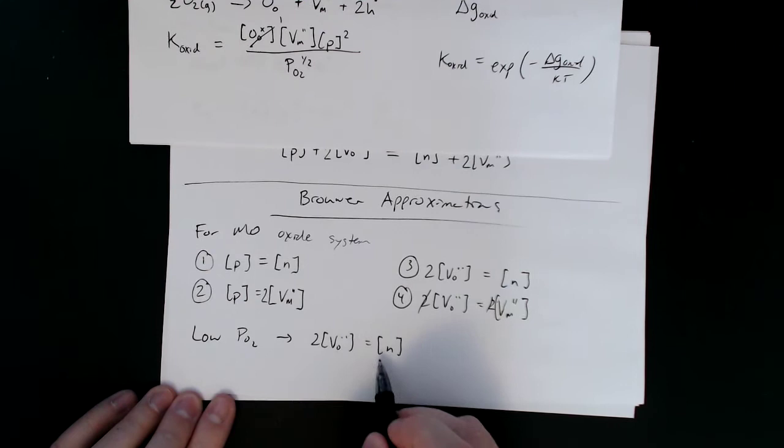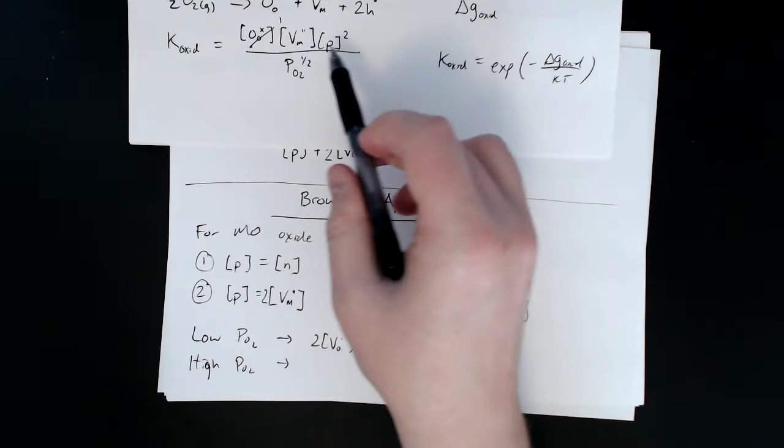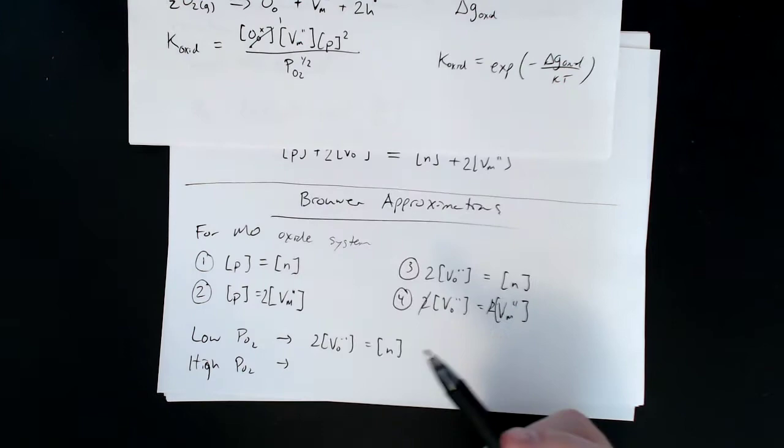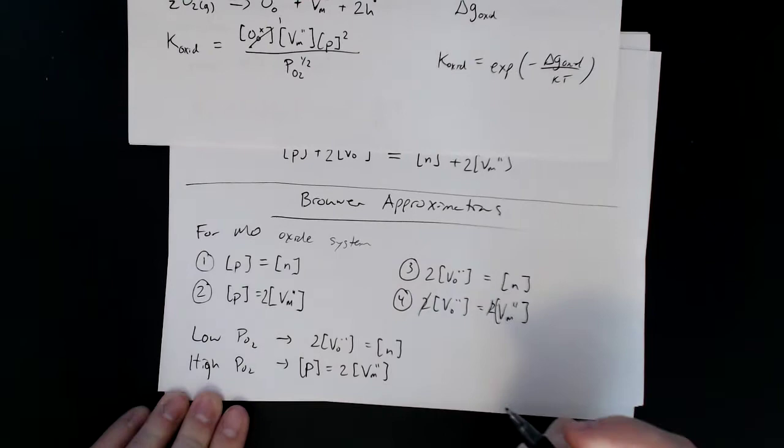And then high pO2, if we again look at that, and I've got it up here, so again we had metal vacancies and holes. So if we look for something with that, metal vacancies and holes, and so that expression is going to be useful in simplifying that expression.